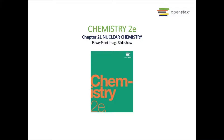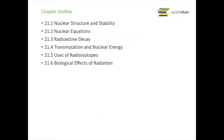Hey everyone, welcome back. We are jumping up to chapter 21 on nuclear chemistry. There are six sections: nuclear structure and stability, nuclear equations, radioactive decay, transmutation and nuclear energy, uses of radioisotopes, and biological effects of radiation.